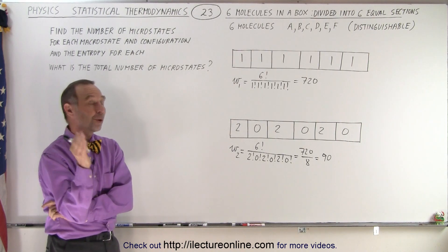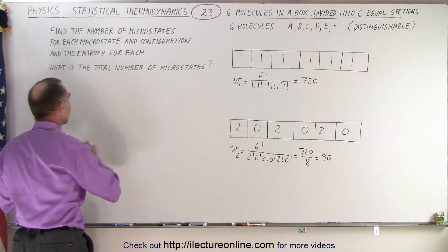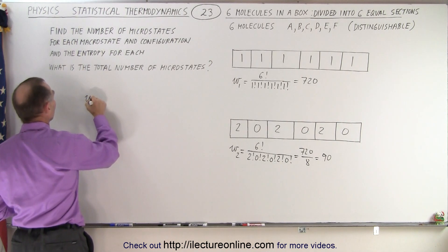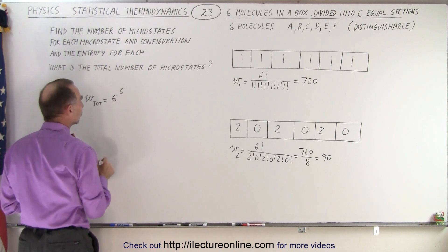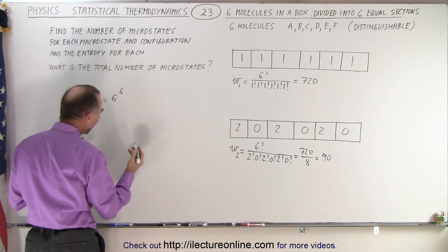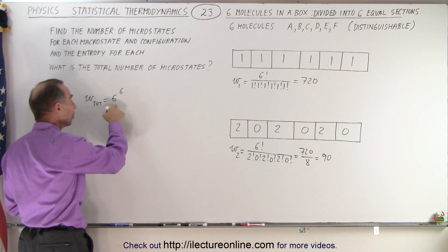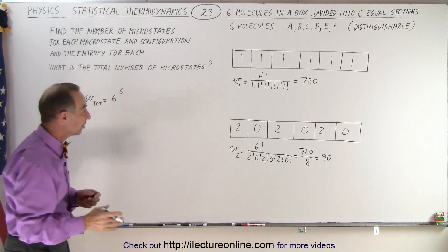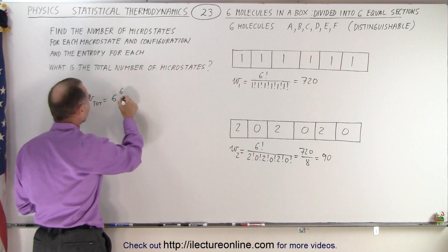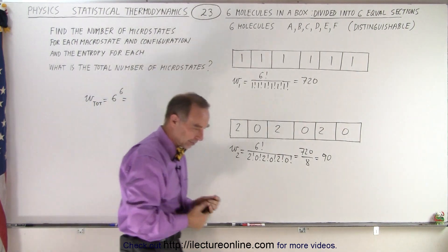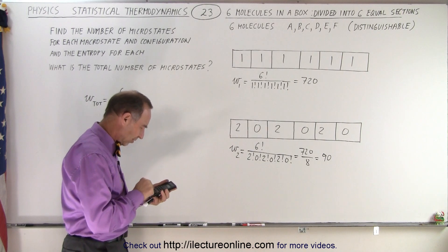Now, what would be the total number of microstates in this arrangement? Well, it turns out that the number of microstates total is equal to, we have 6 molecules and 6 partitions. Actually, number of partitions and molecules, that's the way it goes. So the base is the number of partitions and the exponent is the total number of molecules. So what is 6 to the 6th power? Well, for that I'm going to use my calculator.